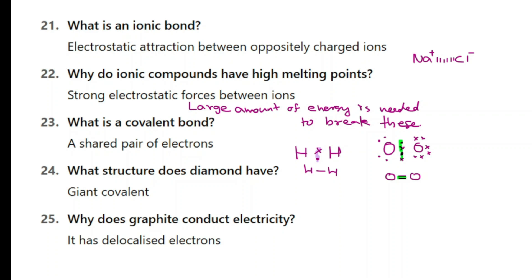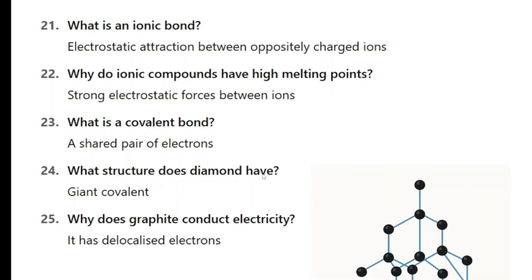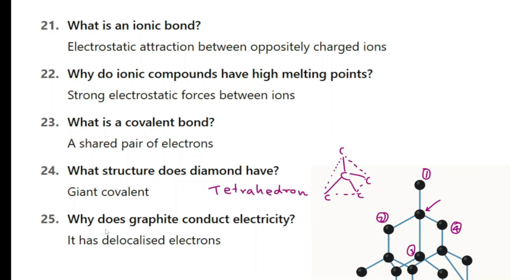What structure does diamond have? We call it a giant covalent structure. Diamond is made up of carbon atoms and each carbon atom is connected to four other carbon atoms. Every carbon atom is connected to four others and we call it a tetrahedral structure.